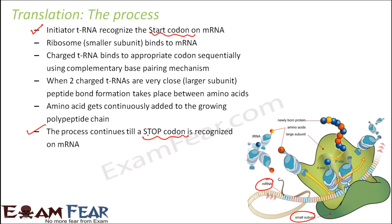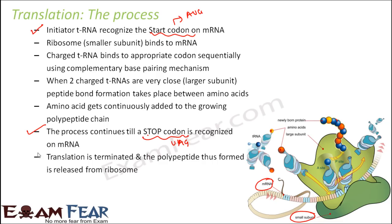The start codon is AUG. The stop codons — UAA, UAG, and UGA — when encountered, the process stops and the polypeptide is released. Translation is terminated and the polypeptide thus formed is released from the ribosome. Replication and transcription take place inside the nucleus, whereas translation takes place outside the nucleus in the ribosome, which is located in the cytoplasm.